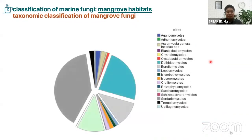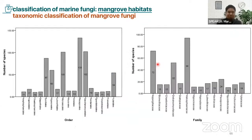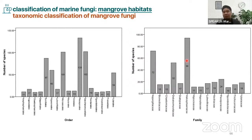For the classes, of course, they are usually composed of Sordariomycetes and Dothideomycetes. For the order, we have Pleosporales as the major one, and for the family we have Halosperiaceae with 94 species.